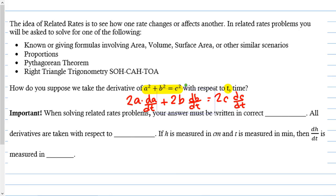Important before we move on: when solving related rate problems, your answer must be written in correct units. Units are really important. This is a free response question on the exam. You're going to have to make sure your answer is written in correct units. All derivatives are going to be taken with respect to time. If h is measured in centimeters and t is measured in minutes, then if I have a rate called dh/dt, it will be measured in centimeters per minute.